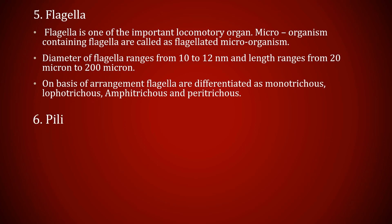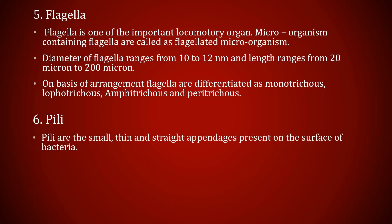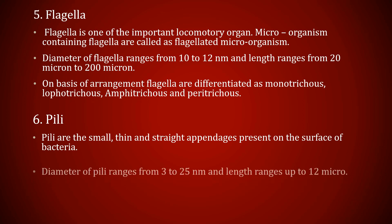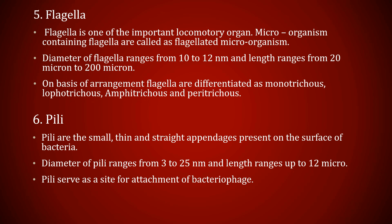The sixth one is pili. Pili are small, thin, and straight appendages present on the surface of bacteria and are also an important locomotory organ. The diameter of pili ranges from 3 to 25 nanometers and length ranges up to 12 microns. Pili serve as a site for attachment of bacteriophages.